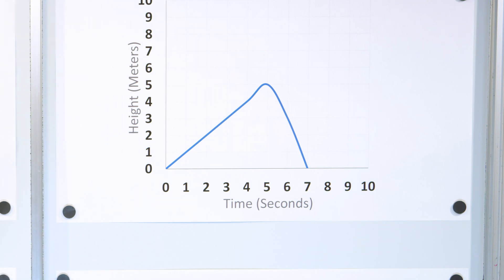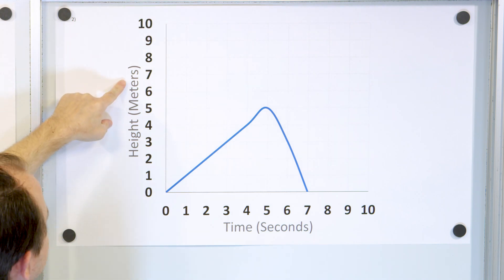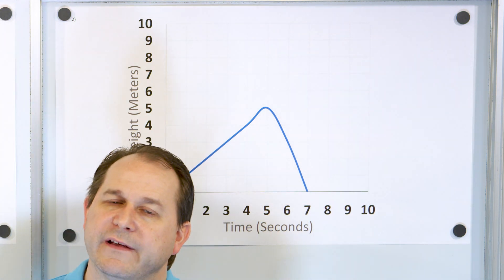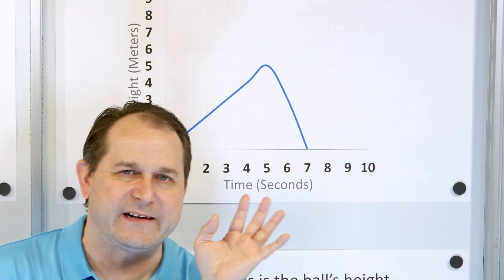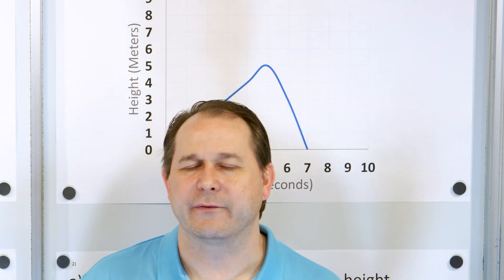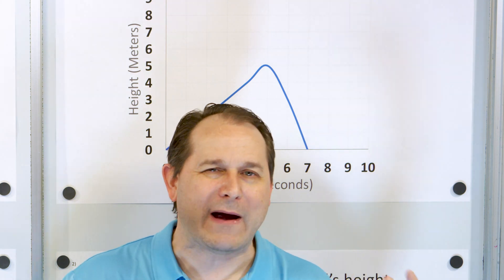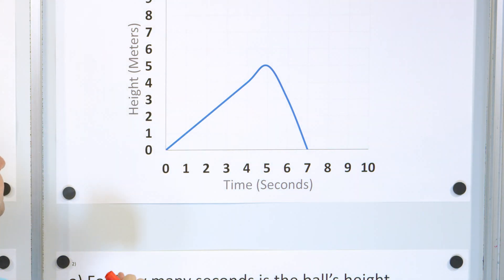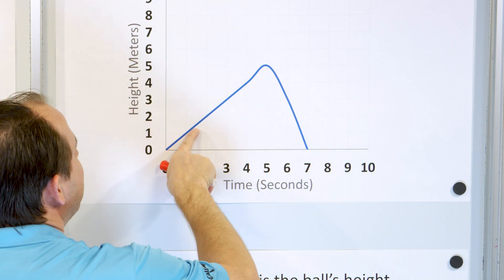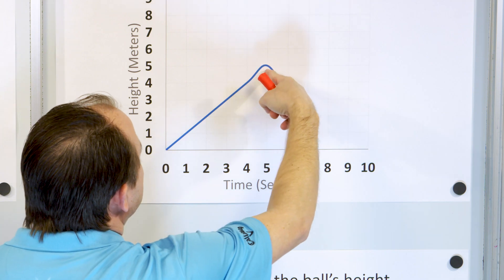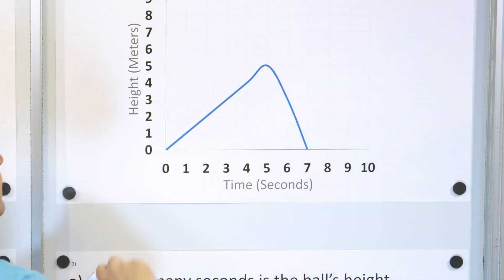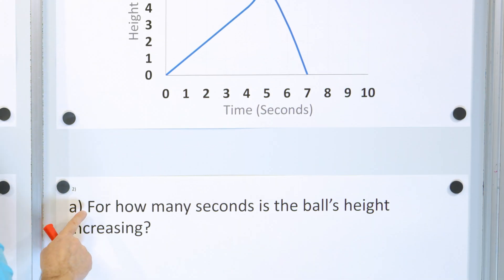Let's take a look at problem number two. Here we have the height in meters of a football as we throw it in the air, and this is the number of seconds that it stays in the air. So you grab a football, you throw it up, it goes up for a ways and then it comes down. This is not a physics class, so I'm not drawing very accurate representations. But you can see that as time goes on, the altitude of this ball goes up, reaches some maximum, and then it begins falling back down. Let's answer a couple of questions about it.